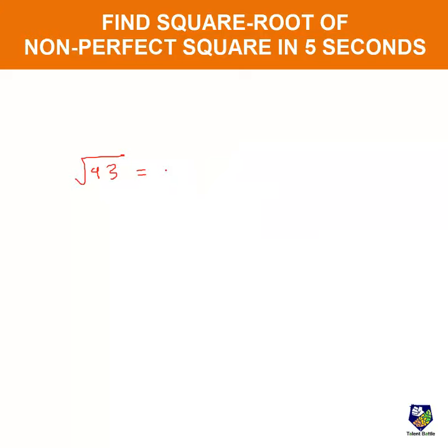For 93: square root of 81 is 9, plus this number divided by double of 9, which is 18. This equals 9 plus 0.66, which is 9.66.